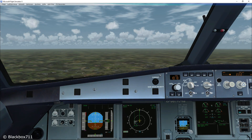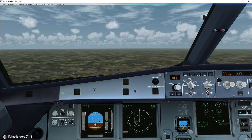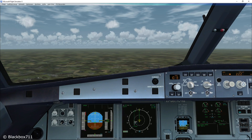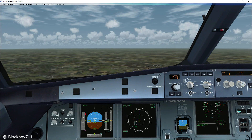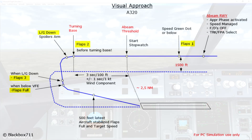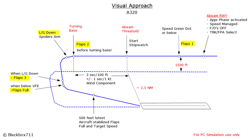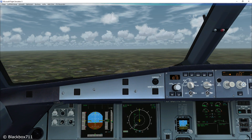After about 15 seconds of outbound time, you select flaps two in order to be at the flaps two configuration before turning base. The outbound timing goes as follows: for each hundred feet above threshold elevation, you multiply by three seconds. If you have tailwind, you subtract one second per knot of tailwind component — so for example, if you have five knots of tailwind you would fly an outbound time of 40 seconds.